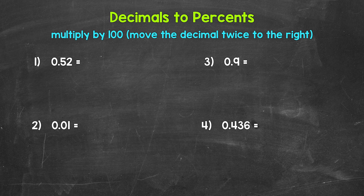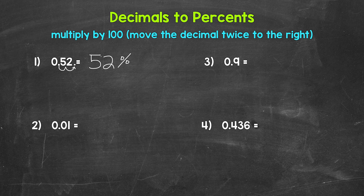So for number one, let's multiply by 100 by moving the decimal once, twice, to the right. This gives us 52 percent. We don't need that decimal at the end after the two when we write our percent, since this is a whole number. We can leave that off. So for number one, our decimal, 52 hundredths, equals 52 percent.